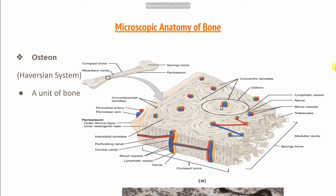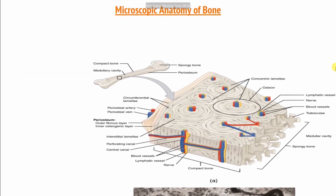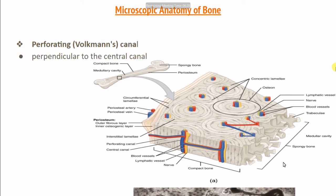What is the osteon? It is present in the center of this canal. The Haversian canal is present in the center of the osteon. The structures you can see here we call the Volkmann's canal. Second, we have the central Haversian canal, which I have told you — where blood vessels and nerve vessels are present. Next, we have the perforating Volkmann's canal, which connects two Haversian canals. These channels are perpendicular to the central channel and also carry blood vessels and nerve vessels.